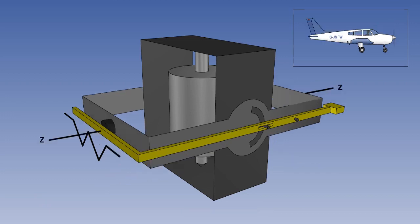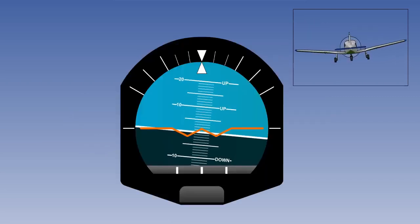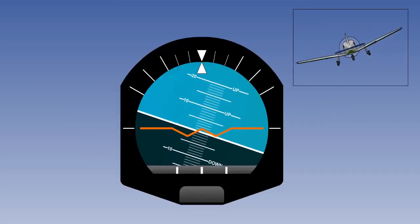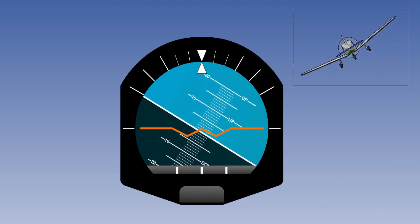In roll, the aircraft, and therefore the instrument case and the gullwing motif, will rotate around the ZZ axis, while the gyro and the attached horizon bar will remain stabilised. The result is that the instrument shows a roll in the direction of the bank.